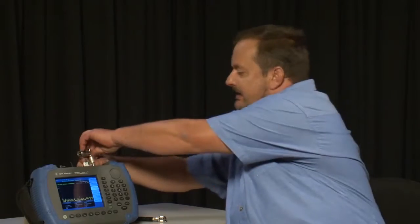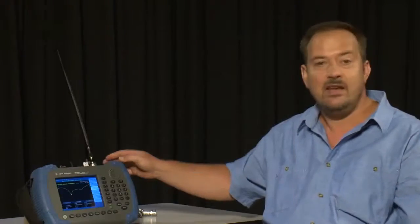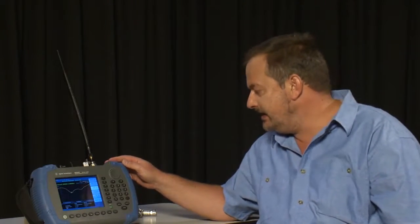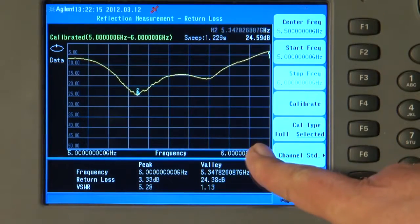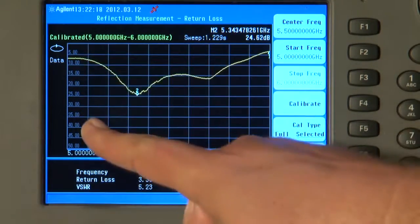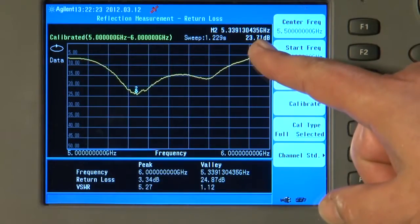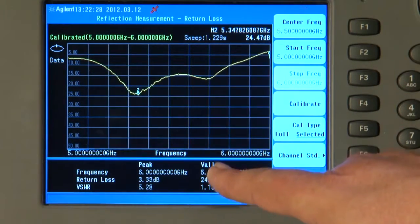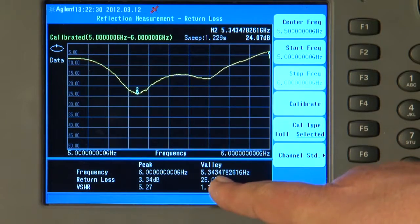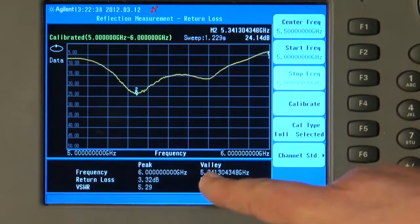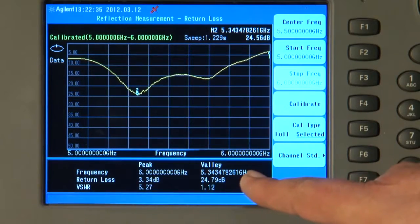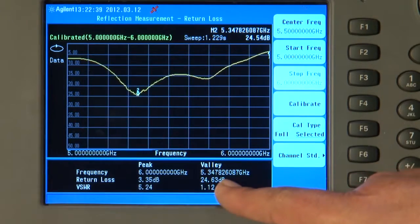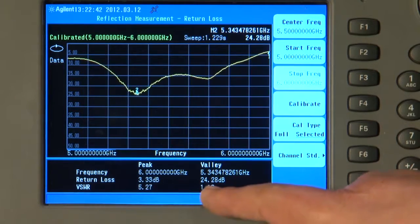So I will disconnect the Standard and connect the antenna. So with the antenna connected, you can see now we are sweeping from 5 GHz to 6 GHz on the X axis, and we are measuring return loss on the Y axis in dB. 0 dB is the top line of the Graticule, and you can see here that there is a marker, marker 2 is automatically searching for the deepest valley on the trace, and you can see that the resonant frequency of this antenna is at about 5.3 GHz. The return loss is about 24 dB and the VSWR at that frequency is about 1.1 to 1.